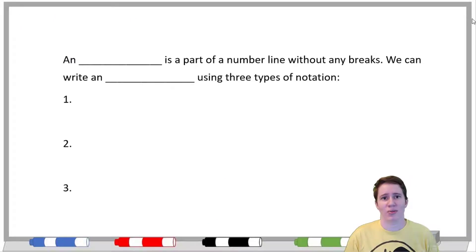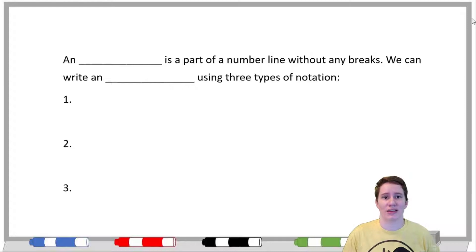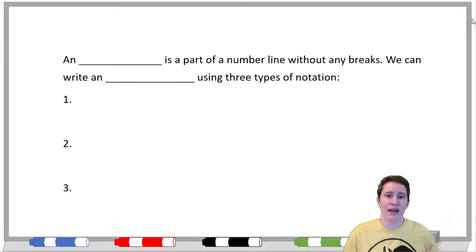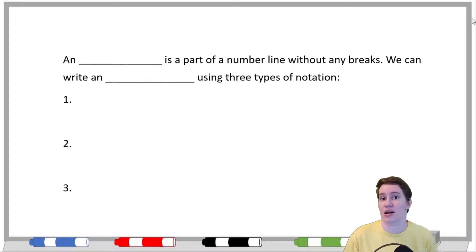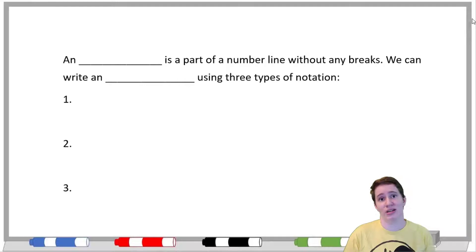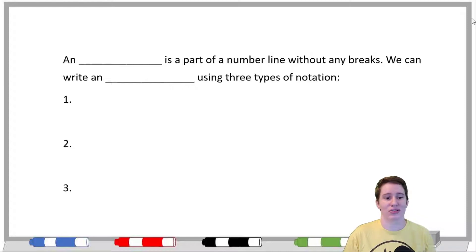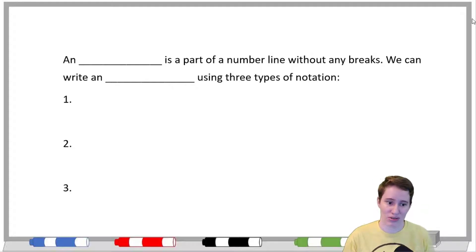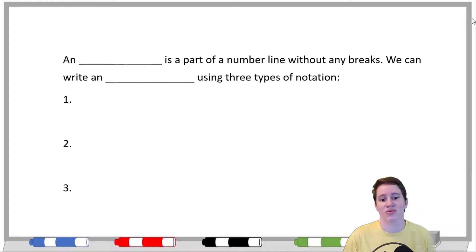The idea is that in math we want to have a way to talk about a set of numbers, a range of numbers, or a domain of numbers — to say the numbers from here to here are part of our answer or have some quality about them. We need to write those universally so other people can understand. Ironically, because I'm talking about having a universal way to write them, we actually have three ways. An interval is a part of a number line without any breaks. We can write an interval using three types of notation.